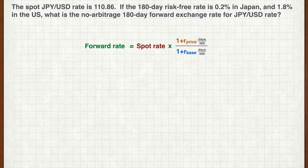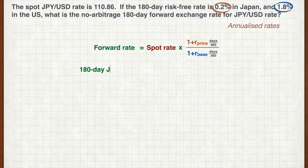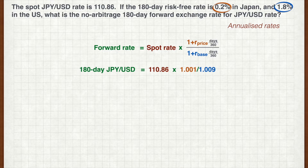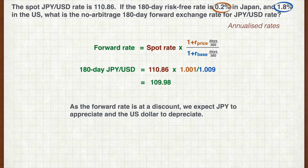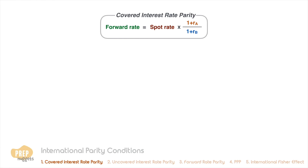First, make sure you did not make this common mistake: unless otherwise stated, interest rates are quoted in annualized figures, so to get the 180-day interest rates we have to divide the annual rate by two. Plugging in the figures, we get a forward rate of 109.98. As the forward rate is at a discount, we expect the yen to appreciate and the US dollar to depreciate.